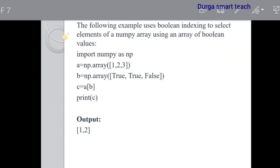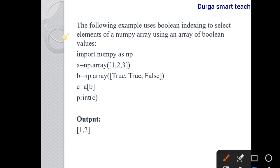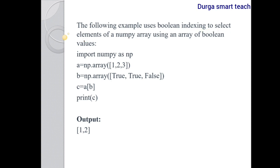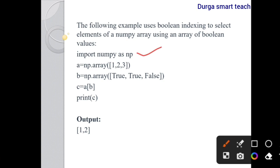Let's see an example. The following example uses boolean indexing to select elements from a numpy array. First, import numpy as np. Then create array a = np.array([1, 2, 3]) — this is an integer data type array. Next, create b = np.array([True, True, False]) — a boolean array.